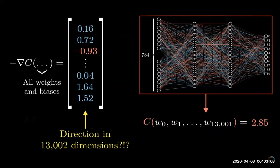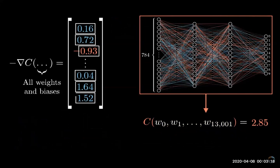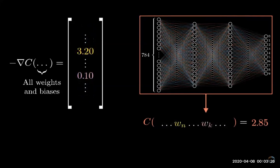Because thinking of the gradient vector as a direction in 13,000 dimensions is beyond the scope of our imaginations, there's another way you can think about it. The magnitude of each component is telling you how sensitive the cost function is to each weight and bias.